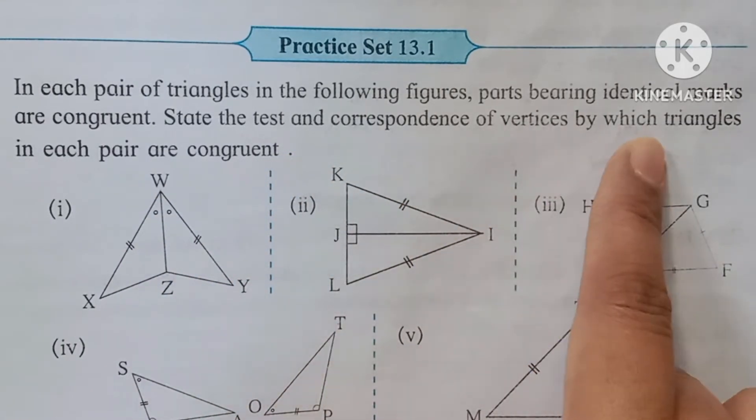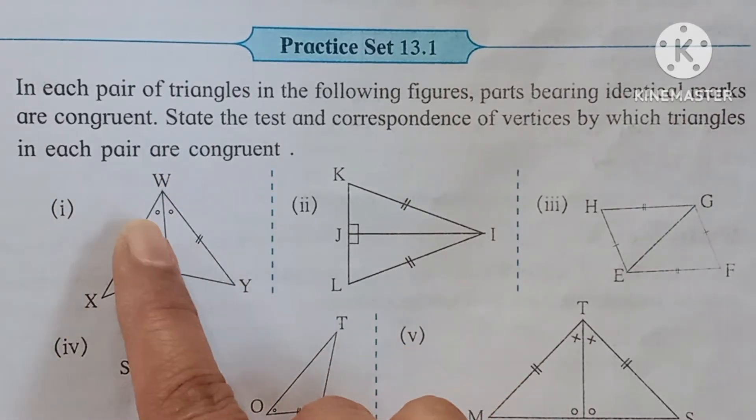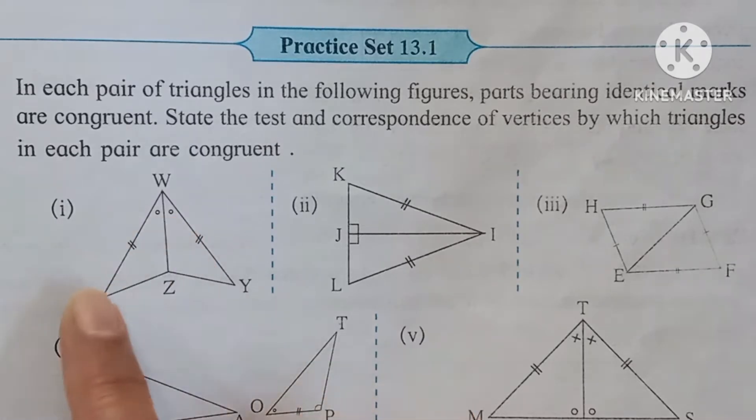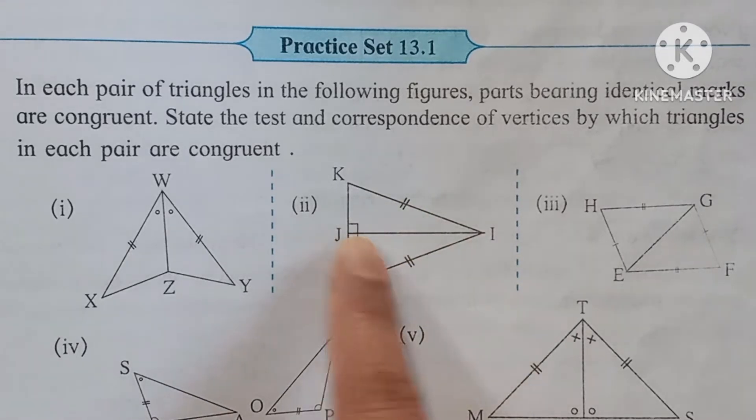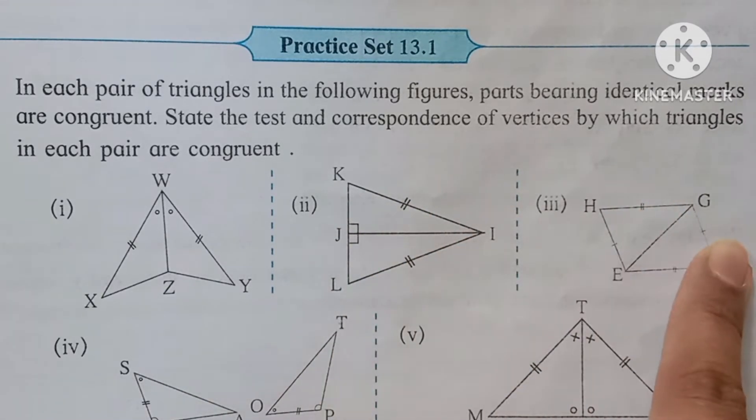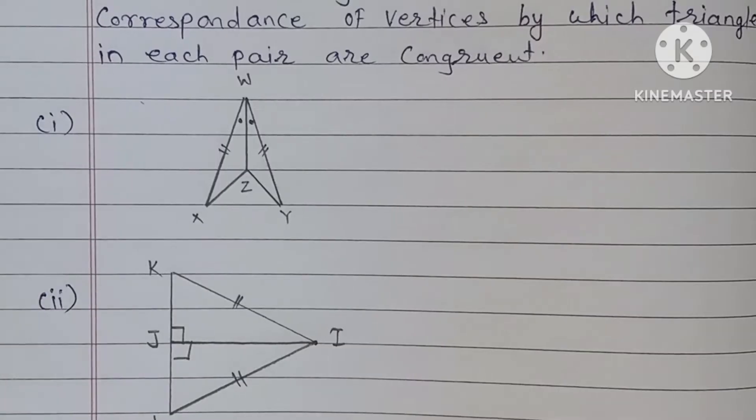Here congruent parts are shown by identical marks. These two angles are congruent, these two sides are congruent. Here also, sides congruent, congruent sides, congruent angles. You can write down the test and one-to-one correspondence of vertices. Let us start now.